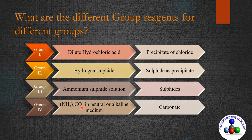All third group cations precipitate with the third group reagent in the form of sulfides. The fourth group reagent is a 1 molar solution of ammonium carbonate in neutral or alkaline media. Cations of this group do not react with the previous three group reagents — they give precipitates with the fourth group reagent in the form of carbonates.